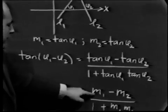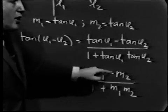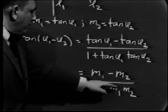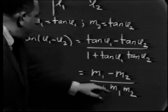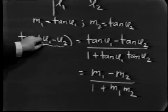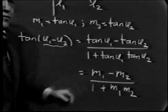On the other hand, by our definitions of M1 and M2, this is M1 minus M2 over 1 plus M1 M2. Now this tells me how to find the angle between two lines just in terms of knowing their slope.